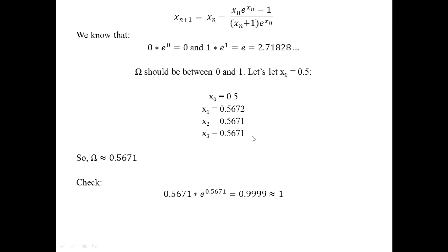So omega is approximately 0.5671. If we check this and do that x times e to the x operation: 0.5671 times e to the 0.5671 should be pretty close to 1 — and it turns out it is, at least to four decimal places. If you're hungry for more digits, it's given as 0.5671432904 to ten decimal places.